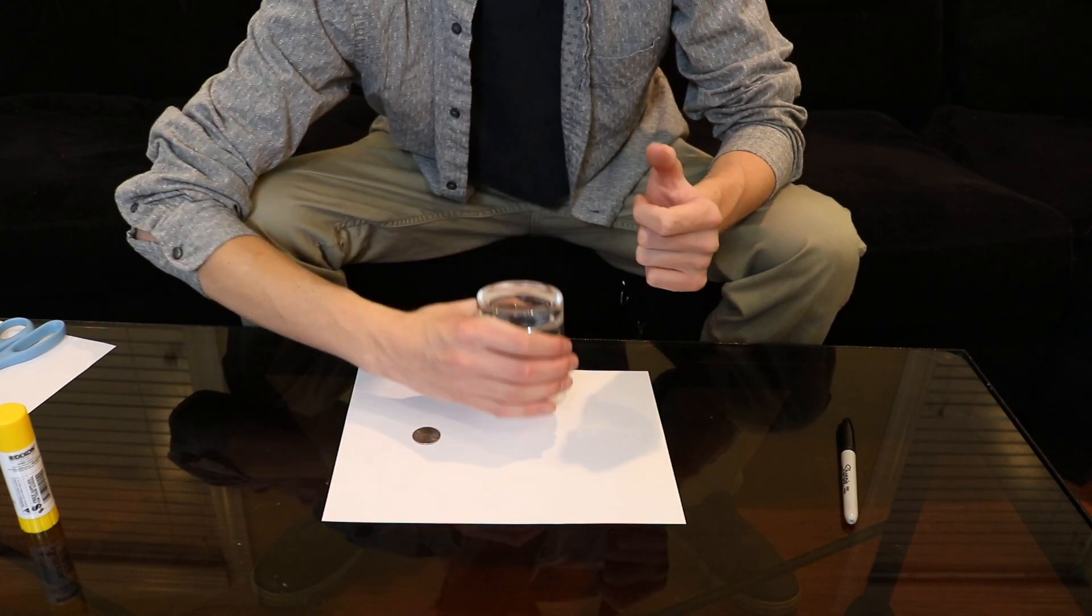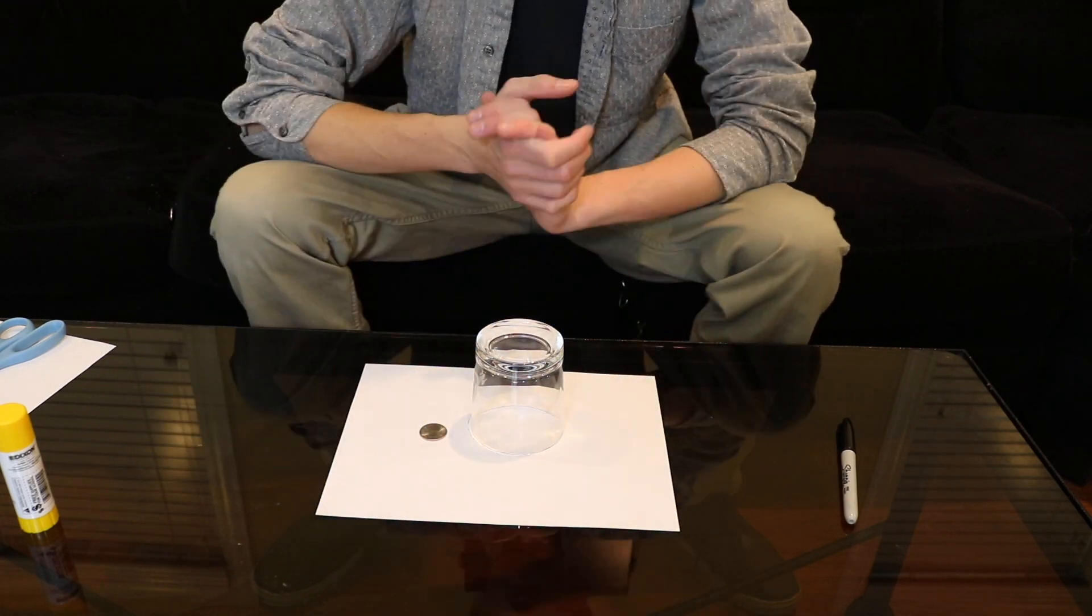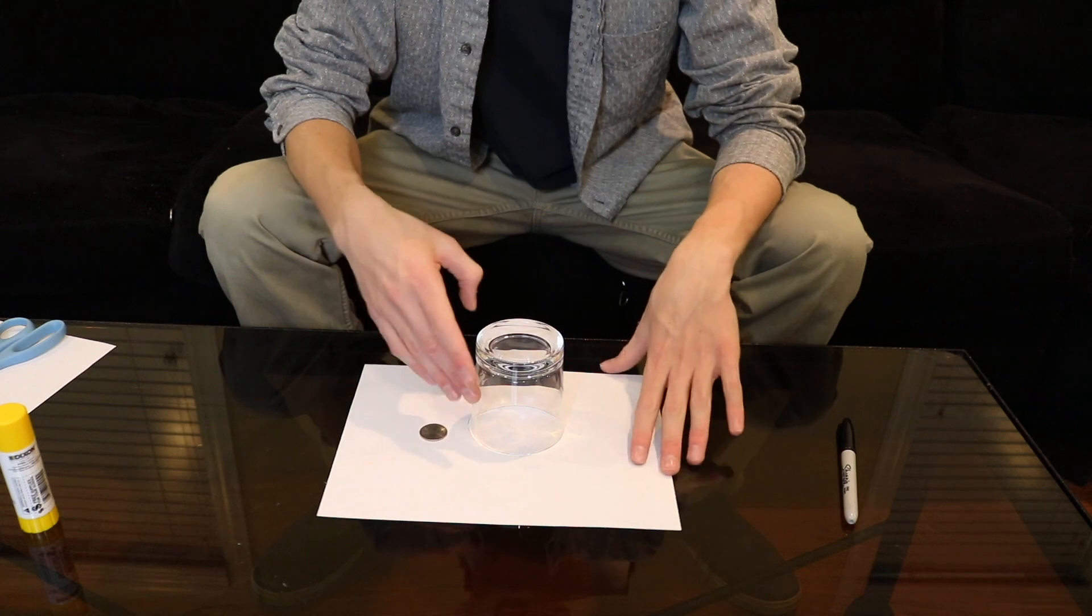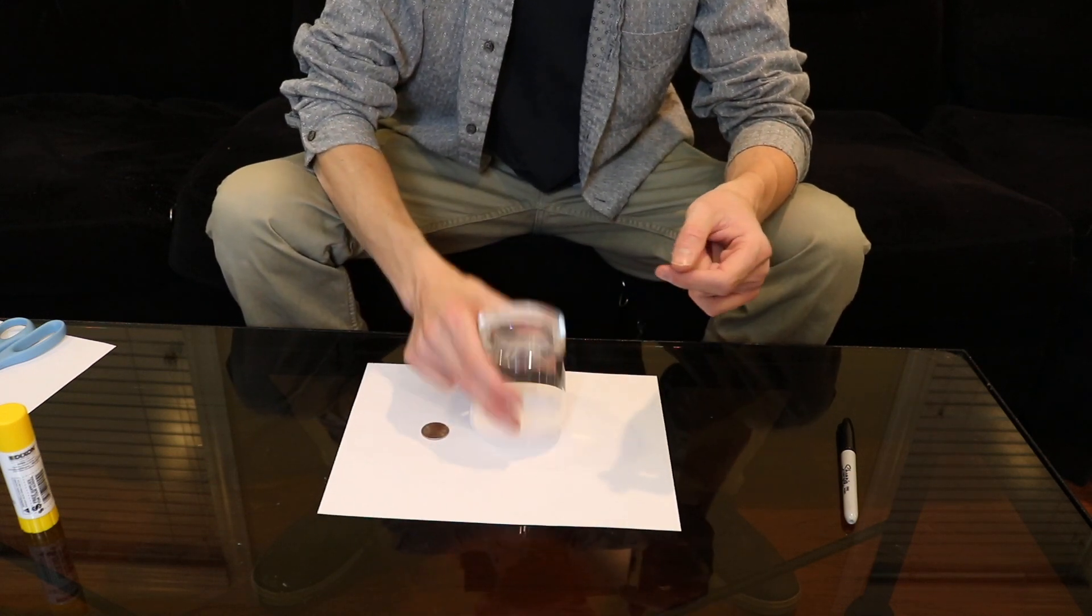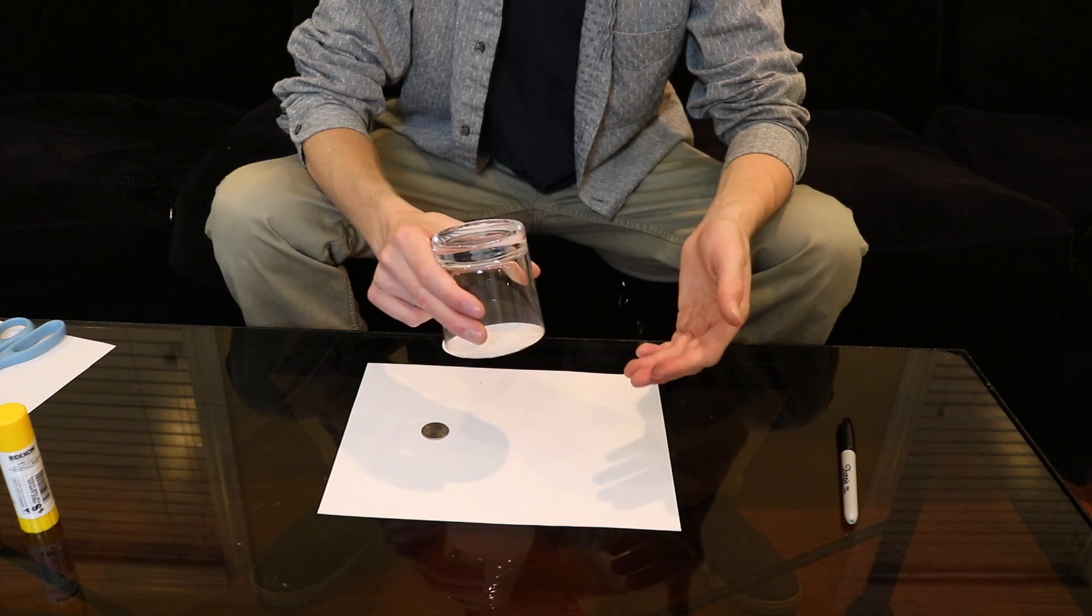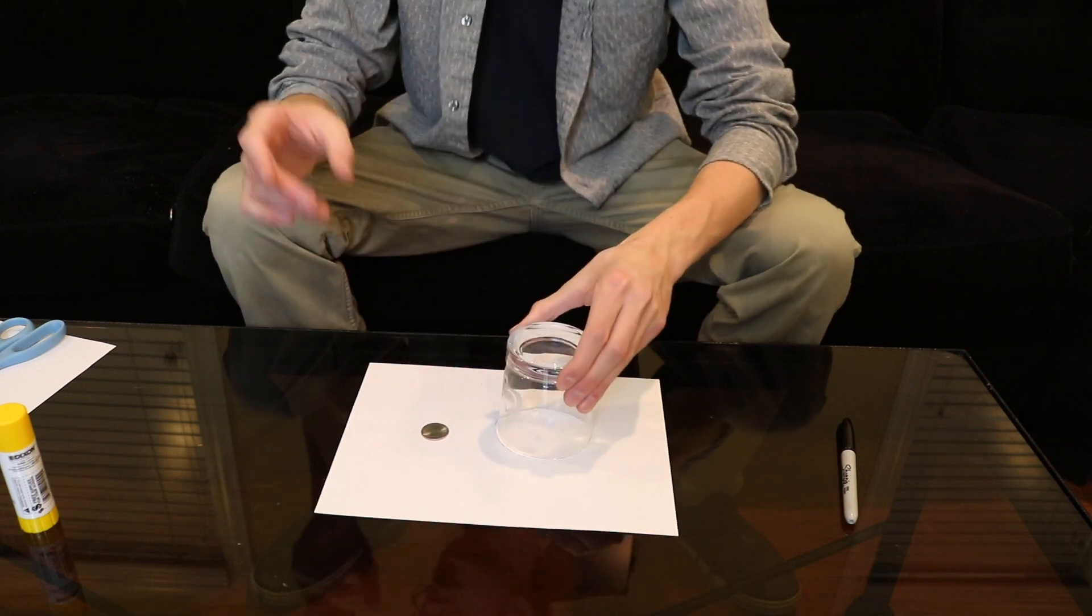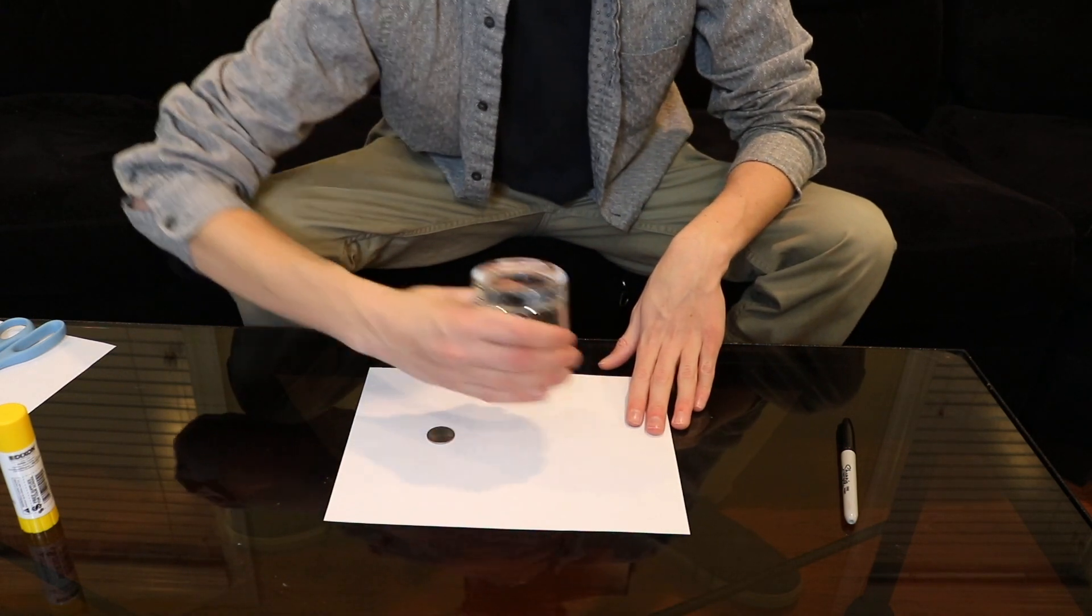A couple tips to make sure you do it properly: again, make sure not to lift up high on the glass. If you have trouble covering up the whole perimeter of the glass to make that illusion, another thing you can do is—hold on, let me grab something.